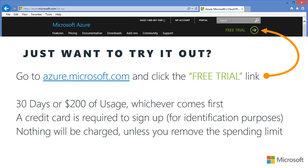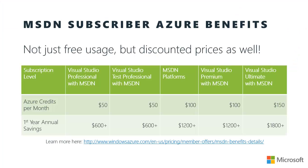If you don't already have an Azure subscription, you can try it out for free. Simply go to azure.microsoft.com and click the green free trial link. You'll get 30 days or $200 of usage, whichever comes first. A credit card is required for sign-up, but that's simply for identification purposes. There's a $0 spending limit on the free trial, so nothing will be charged unless you remove the spending limit. If you're an MSDN subscriber, you already have free access to Azure through the MSDN subscriber Azure benefit, going all the way up to $150 a month for Visual Studio Ultimate subscribers, at a discounted price so your credits go further.